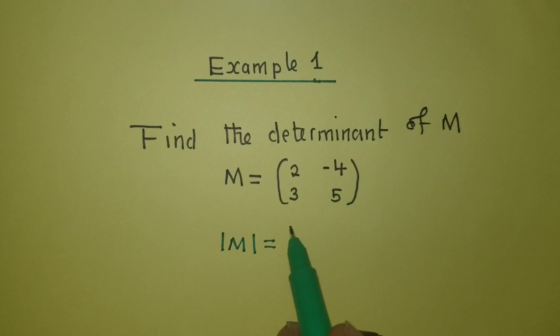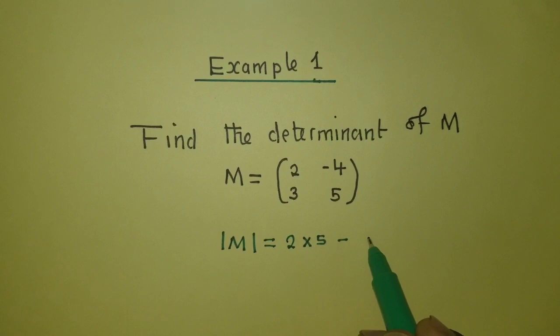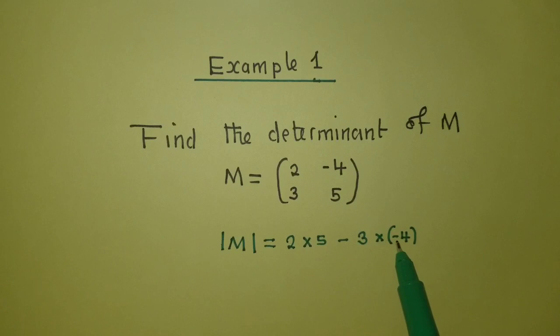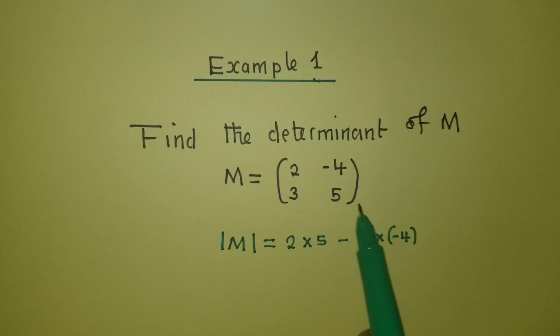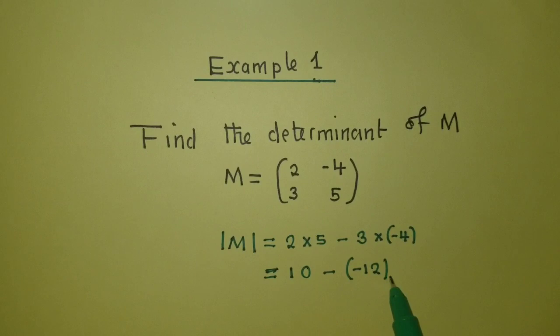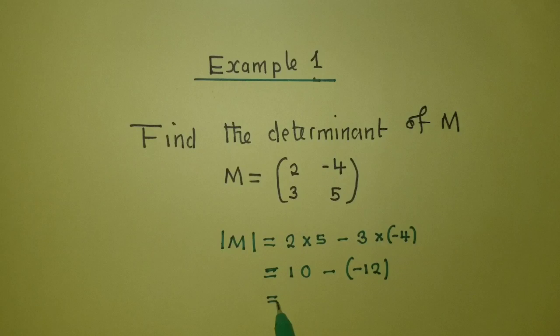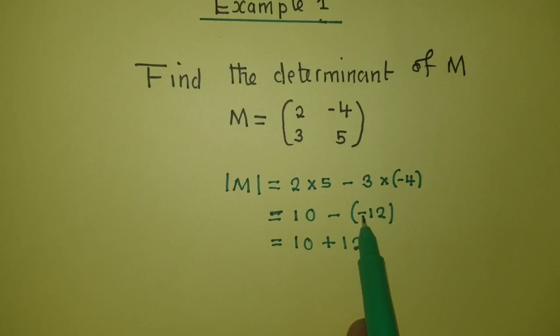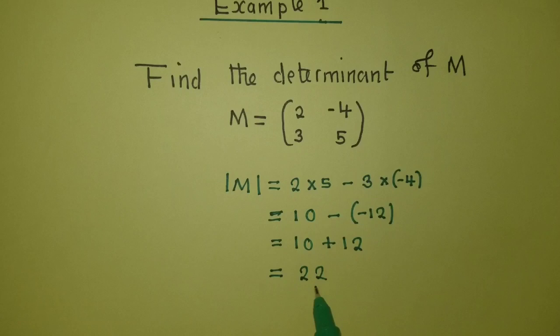That would be 2 times 5 minus 3 times negative 4. Remember to put this entry inside brackets, because it has a negative sign. Working out: 2 times 5 is 10, minus negative 12, because 3 times negative 4 is negative 12. So we get 10 plus 12 — negative and negative gives a positive — which equals 22. So the determinant is equal to 22.